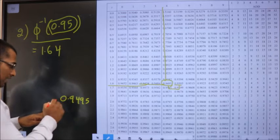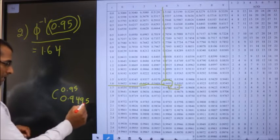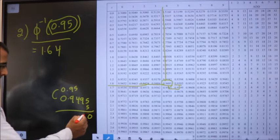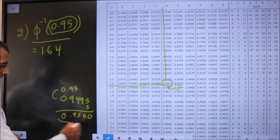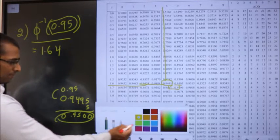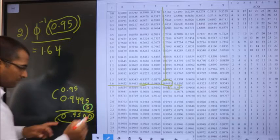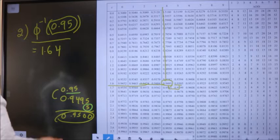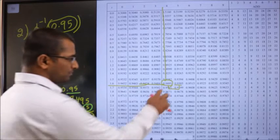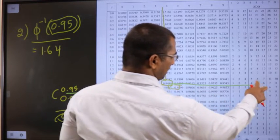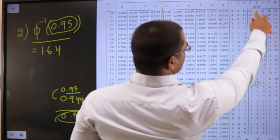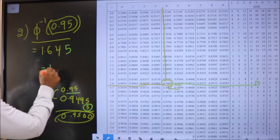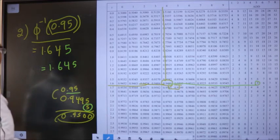For this to become 0.95, I need to add 5 more to 0.9495. So in the same row I look for 5 in the difference columns, and I have exactly 5 there. It is present at column 5, so the third decimal becomes 5. Therefore, phi inverse of 0.95 is 1.645.